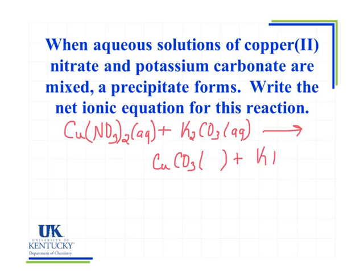Our other product is potassium nitrate. Potassium has a plus 1 charge, nitrate has a minus 1 charge, so we won't get any other subscripts. I do see that I'm going to need a 2 in front of the potassium nitrate to get a balanced chemical equation. I'll also leave the parentheses blank until we determine the phase.